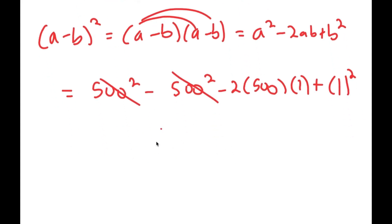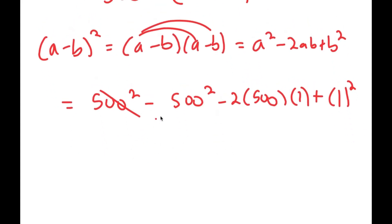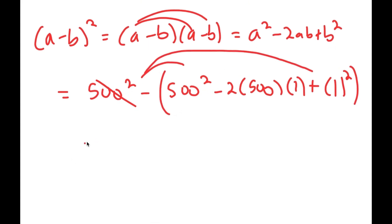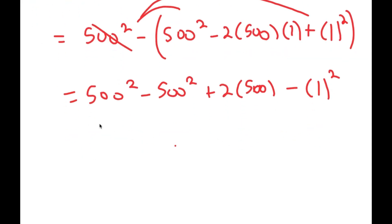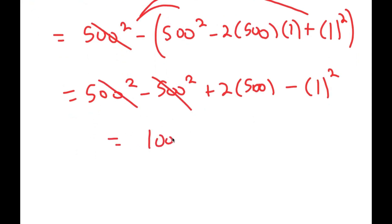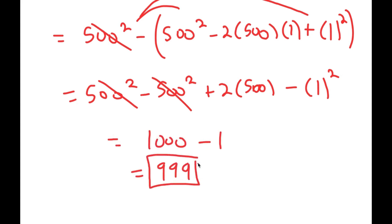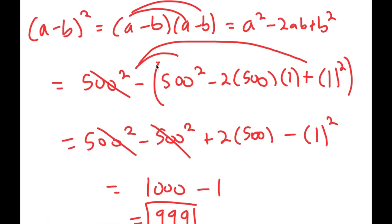However, this is actually going to be in parentheses, so the negative sign distributes. This turns into 500 squared minus 500 squared plus 2 times 500 times 1, minus 1 squared. Now these two can cancel out. So I get 1000 minus 1, which is equal to 999. So again, I get 999 as my answer.